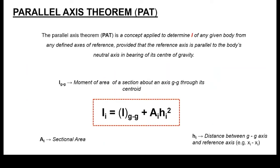What happens if you are in a situation whereby we don't have a beam with a regular shape profile? This is where the concept of Parallel Axis Theory comes into play. Essentially, you can calculate the second moment of inertia of a given beam from any point of reference, as long as that point of reference is parallel to the neutral axis of the given beam structure. Mathematically it's represented by: I equals I subscript GG plus A times h squared.